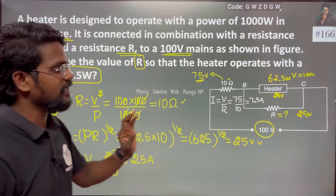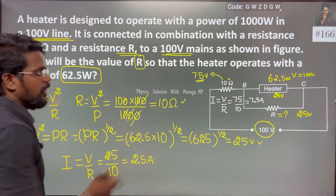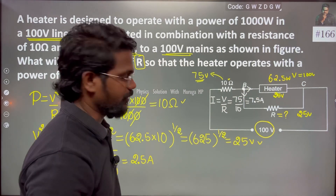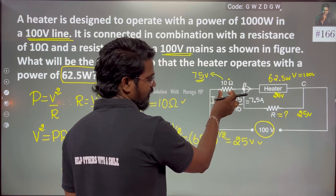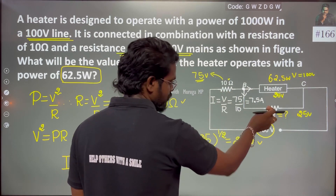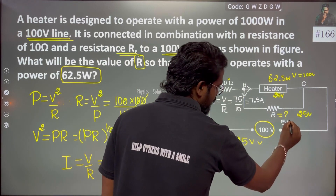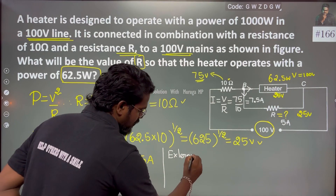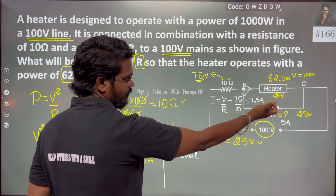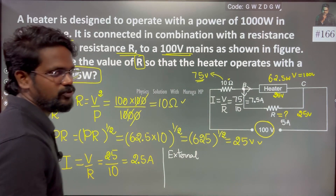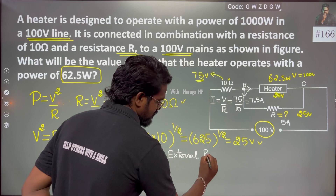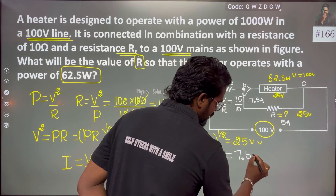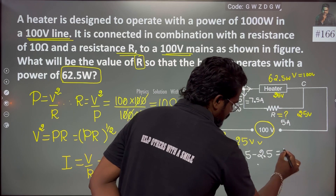The current through the heater is 2.5 Ampere. Applying the junction rule — incoming equals outgoing — out of 7.5 Ampere, 2.5 goes through one branch, so 5 Ampere flows through the external resistance. Thus the current through the external resistance is 5 Ampere.